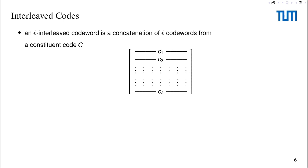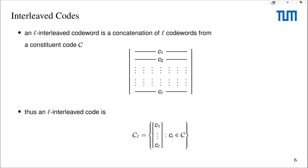So first, what interleaved codes are. An L interleaved codeword is mathematically very simple. You take a constituent code C, and from it you take any L codewords and concatenate them together. You can imagine putting them in a matrix, as depicted here. This entire matrix is then one L interleaved codeword. And if you put all such possible matrices in a set, this set would be an L interleaved code.